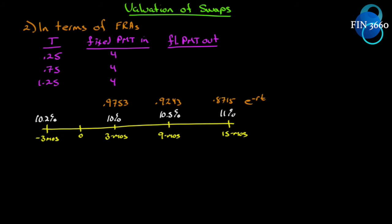The second way of valuing a swap is in terms of forward rate agreements. I don't really like this one — there's a lot of extra work — but you should know how to do it. Once you have a spreadsheet or algorithm programmed, all you have to do is input the variables. It doesn't matter which way you go, so you should be aware of how to do it both ways.